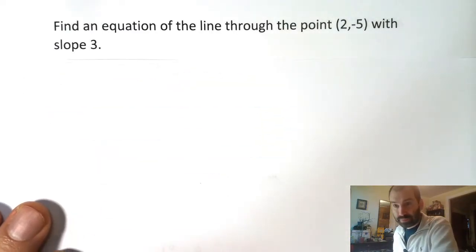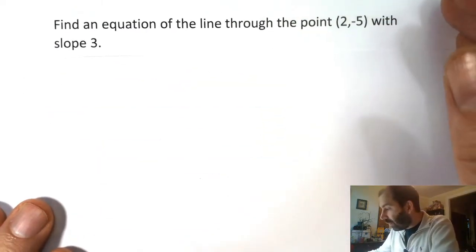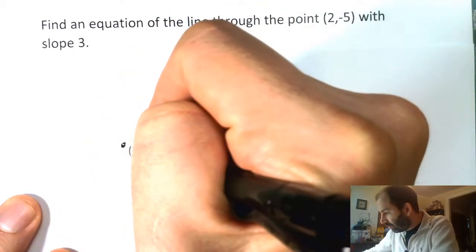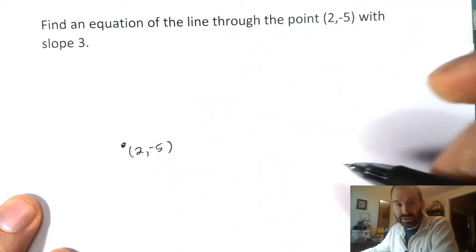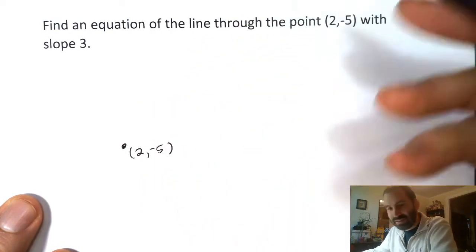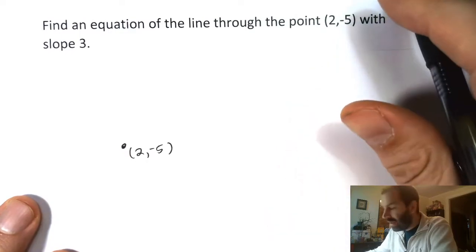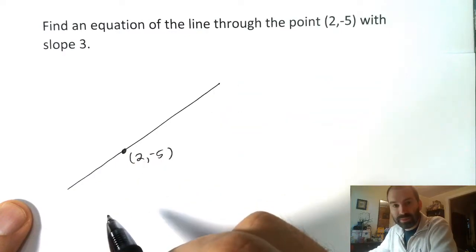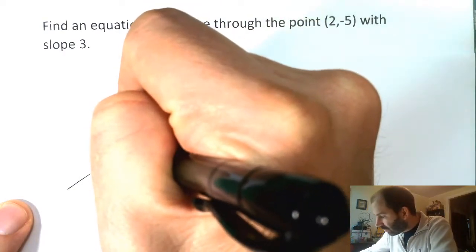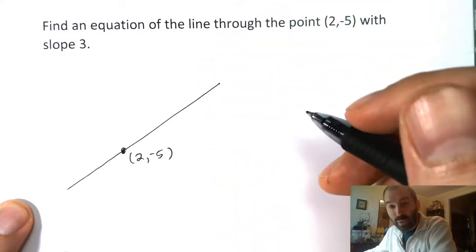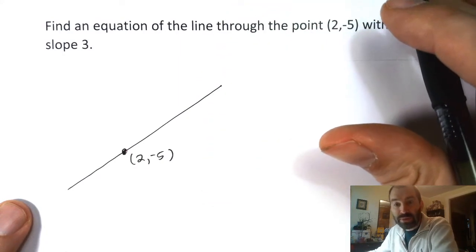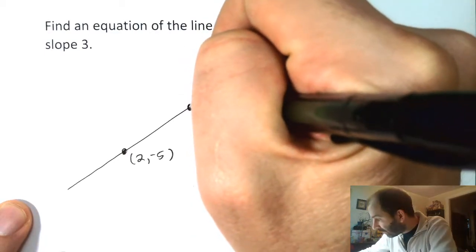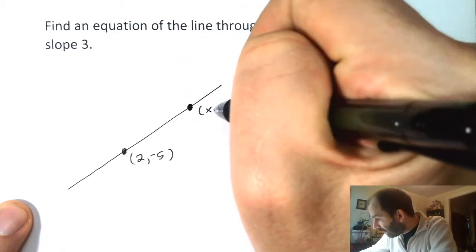Here's the idea. If I want to find an equation, let's take this point (2, negative 5), wherever it is. I'm not drawing axes or anything — I'm just going to draw the point. If there is a line through this point, what my equation is going to do is it's going to involve x and y. And what do x and y represent? They represent the coordinates of another point on the line. So let's pick another point on the line and label it (x, y).